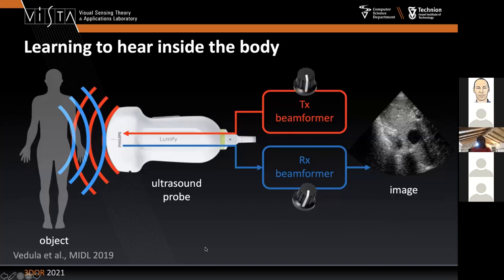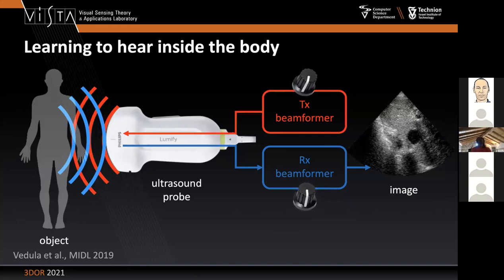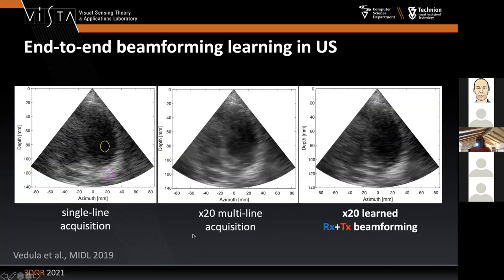What is more interesting is to learn the transmission as well. When we learn the transmission together with the received beam former, we see patterns that don't look like focused beams — not even like beams at all. This is something you would never probably configure your machine to transmit, but in concert with the learned beam former, the machine produces better images with smaller artifacts. You can roughly increase the acquisition speed by a factor of three with comparable image quality.